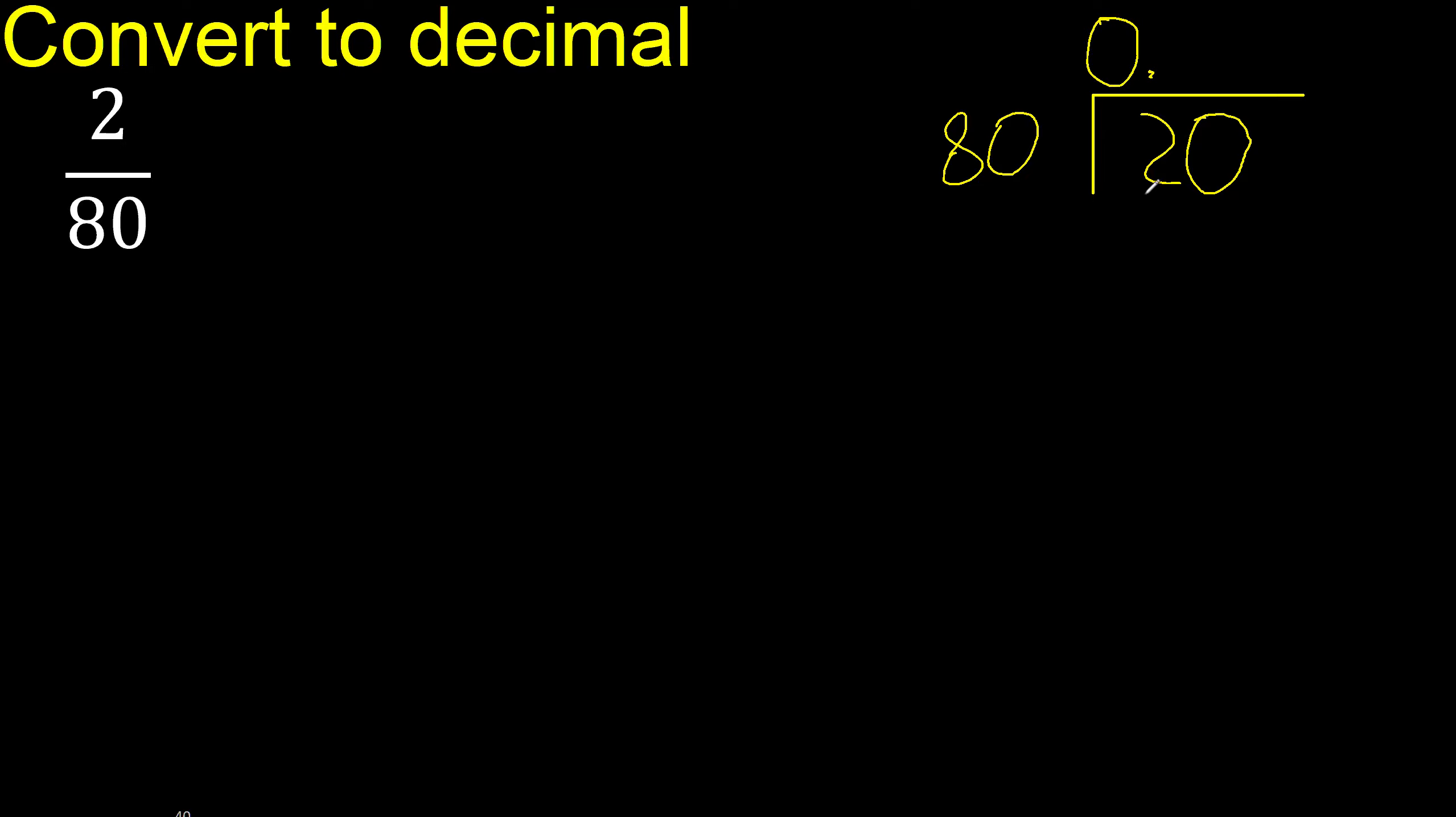0 point. 20 is less than 80, therefore complete. 0. 0 point is here.